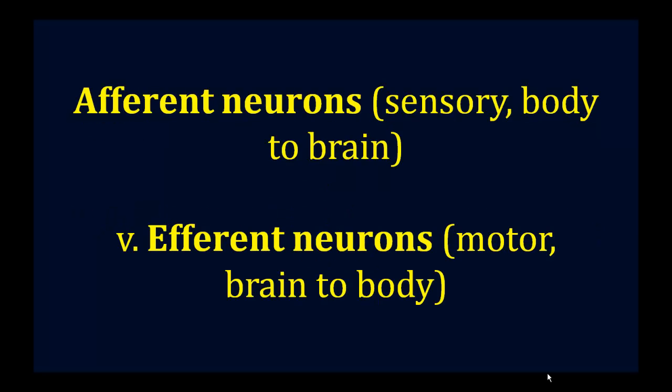Afferent and efferent neurons. Afferent neurons are sensory neurons. They go from the body to the brain. How do they affect you? The body to the brain. Whereas efferent, or trying to effect change, is the motor neurons. It's the brain to the body.